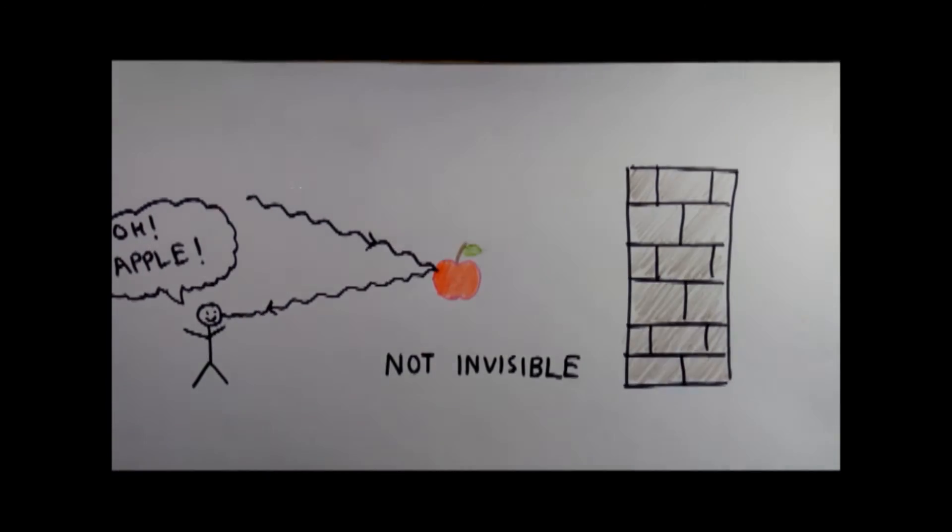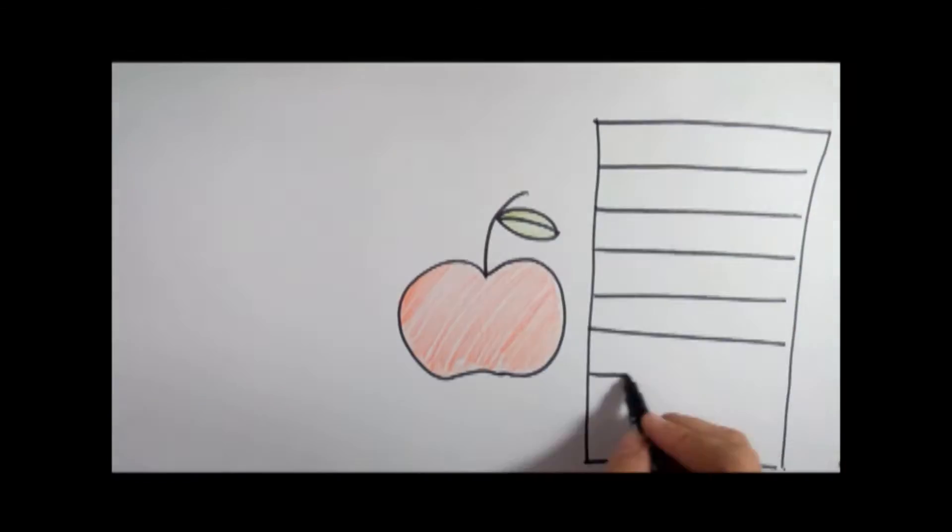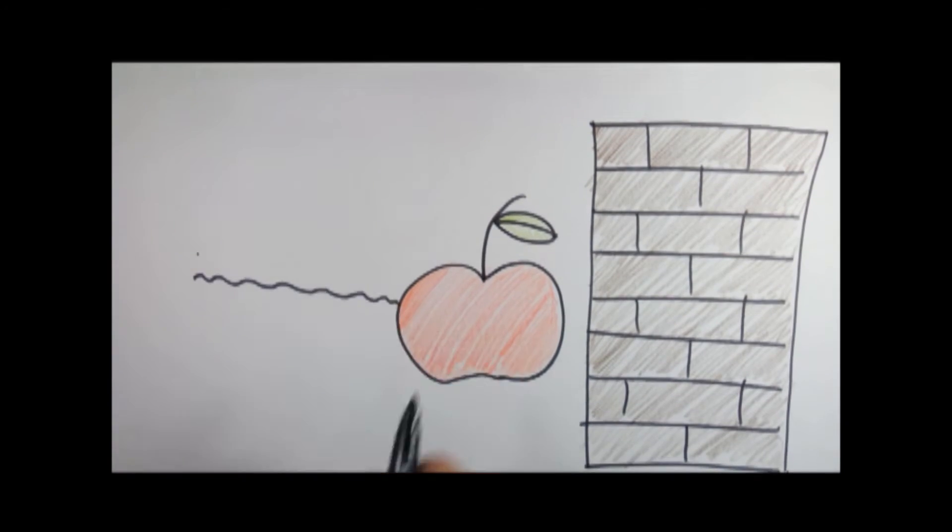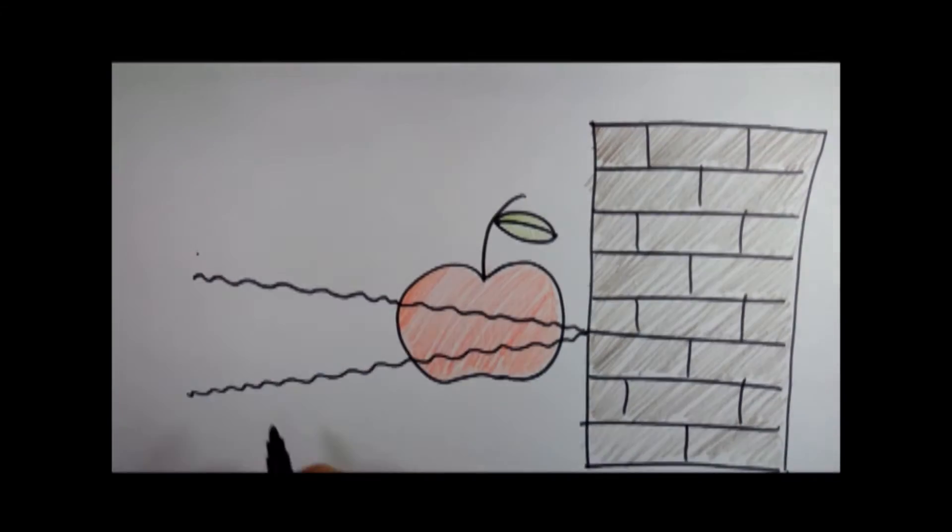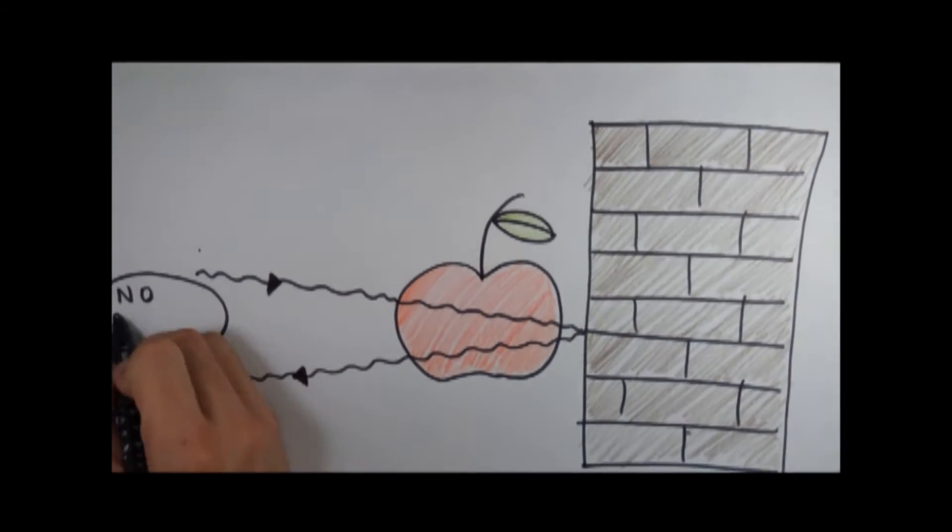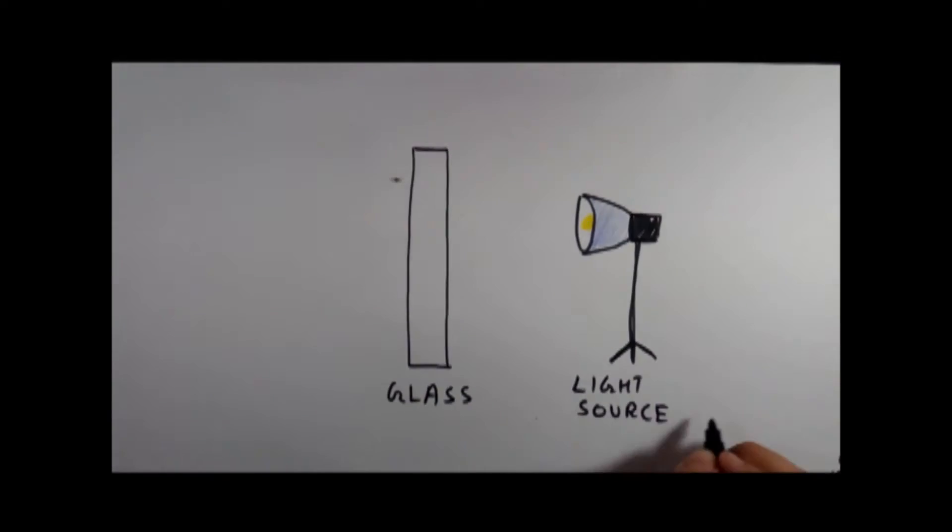Now, to make things invisible, we have two options. The first one is that we make the light wave pass directly through the apple so that it doesn't reflect back from the apple itself but rather from the wall behind it. So the apple becomes practically invisible to us. This is what happens with glass - the light waves pass directly through the glass.